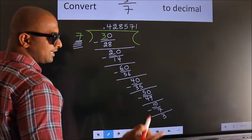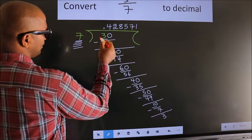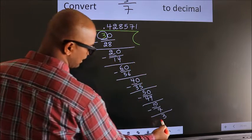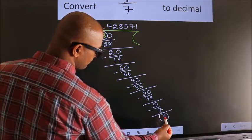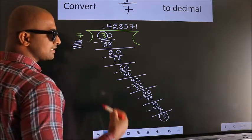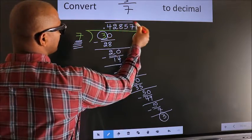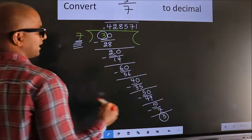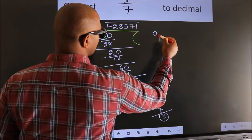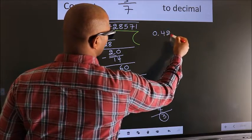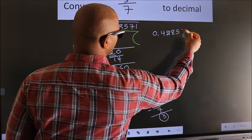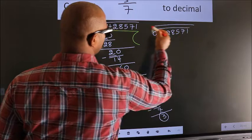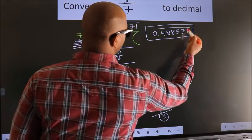Now here you observe — we had 3 here at the start, and we got 3 again. That means we get a bar on all these numbers. Therefore, our answer is 0.428571 with a bar on these numbers. This is our answer.